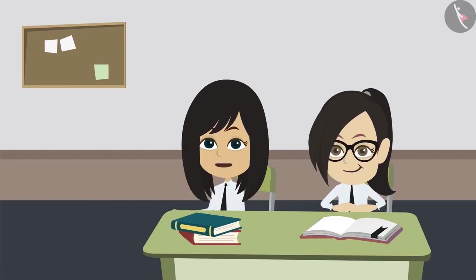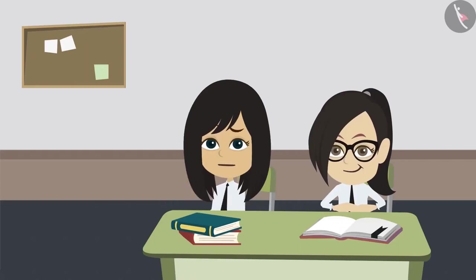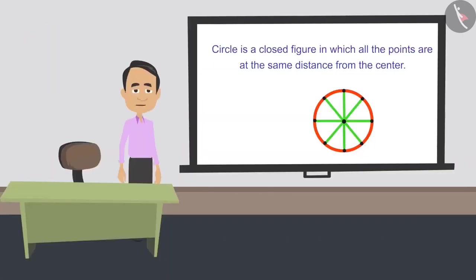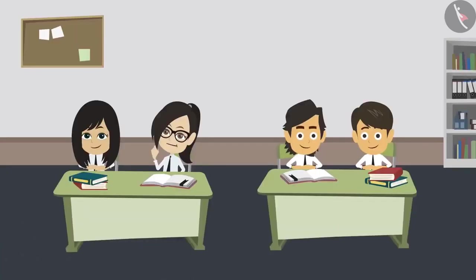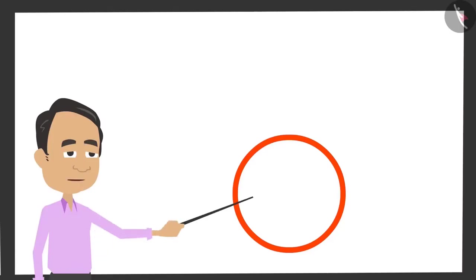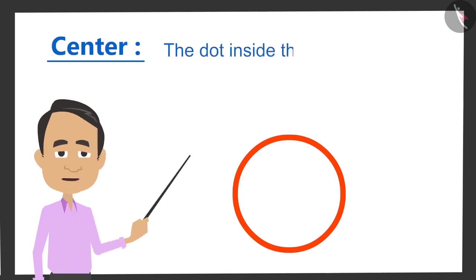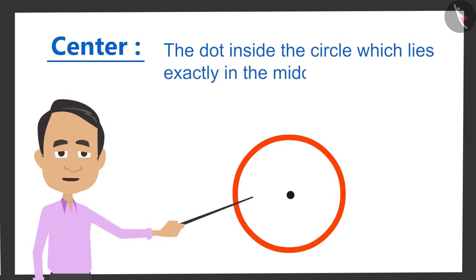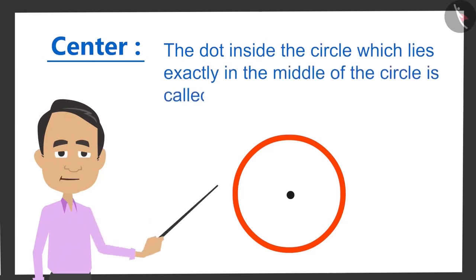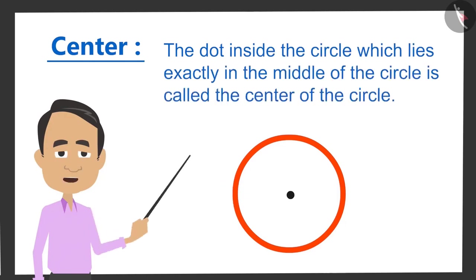Sir, now we know the definition of a circle, but we have not learned how to measure it. As soon as I tell you the properties of a circle, you will learn about measuring it. Sir, then tell us. The first property of a circle is the center. The dot inside the circle which lies exactly in the middle of the circle is called the center of the circle.